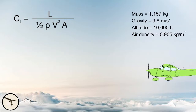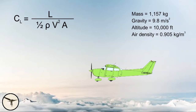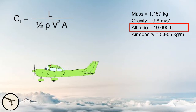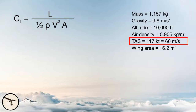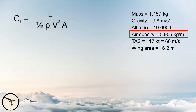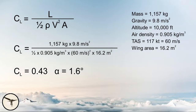For the second calculation, we will fly at about 65% power at 10,000 feet. In the pilot operating handbook, we find 64% power at 2,600 RPM — that's close enough. The true airspeed is 170 knots or 60 meters per second. The air density at 10,000 feet is 0.905 kilograms per cubic meter. Inserting the numbers into the formula gives a lift coefficient of 0.43 and an angle of attack of 1.6 degrees. As you can see, the speed of the airplane plays an important role when it comes to lift.